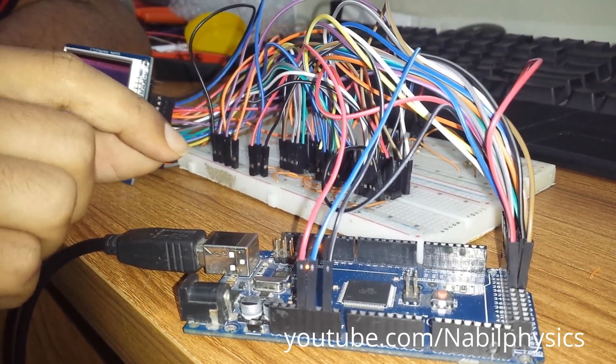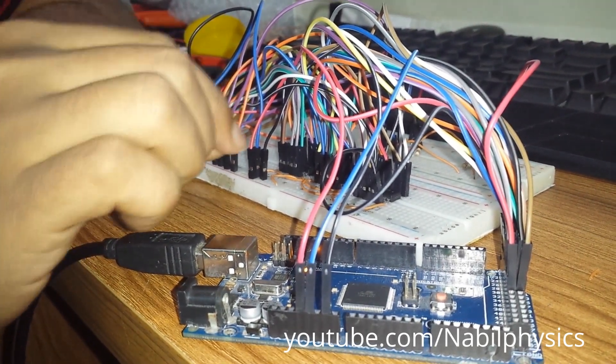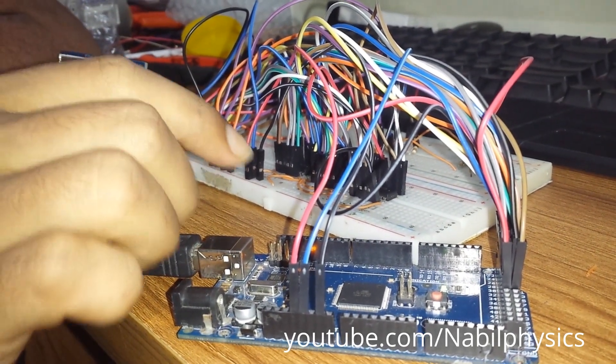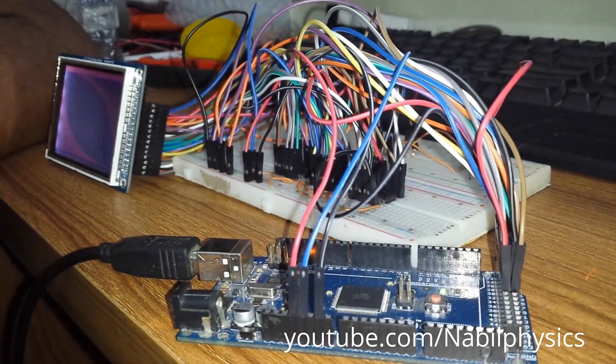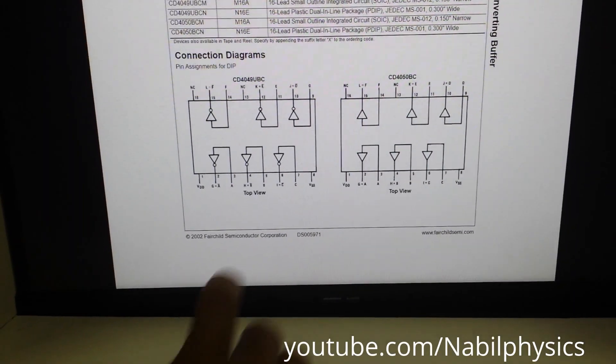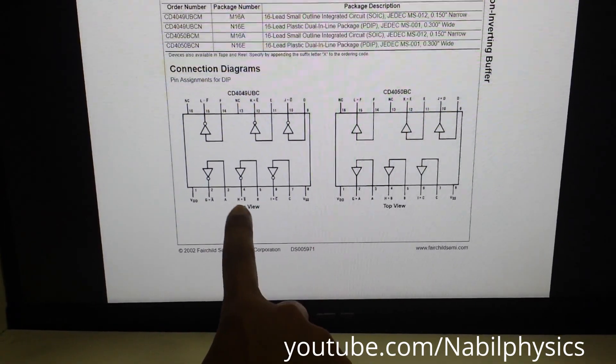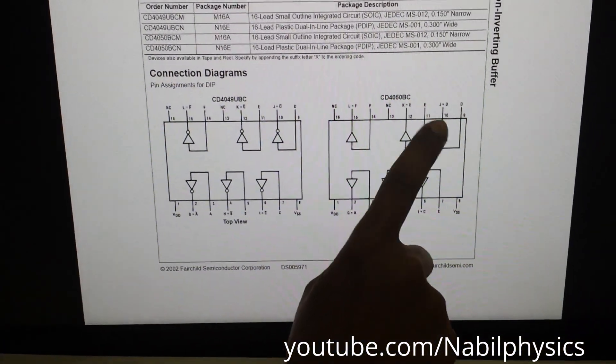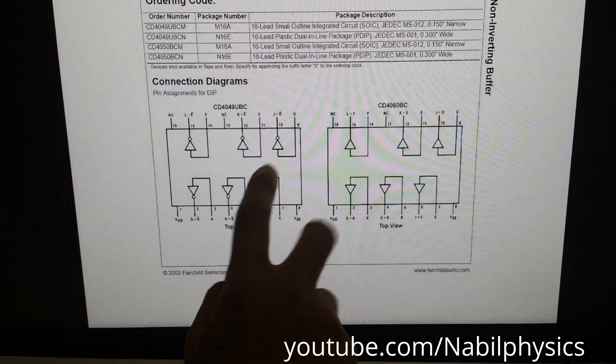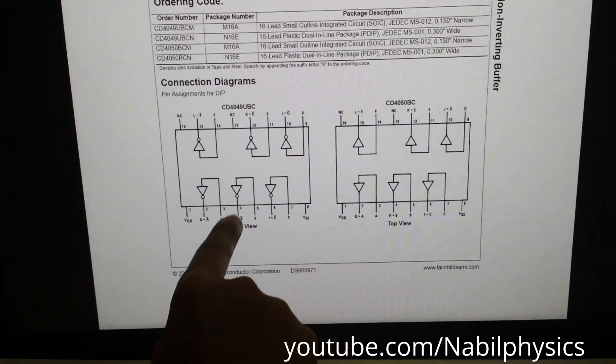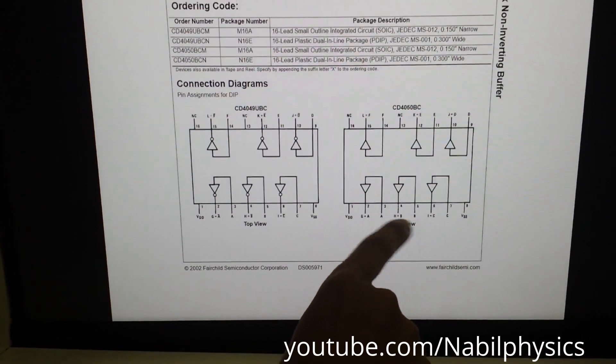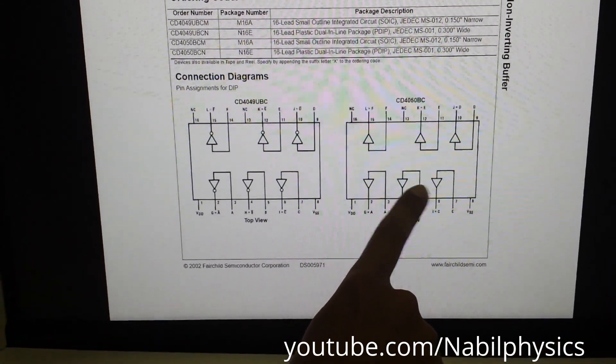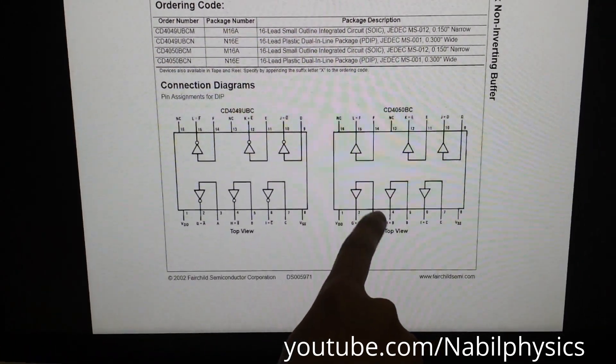In this project I have used CD4050 IC for voltage level shifting. Here is the circuit diagram for connecting Arduino with the TFT display. This is the inside diagram of this IC and we can see that there are two ICs CD4049 and CD4050. Both are of the same family but this is the voltage inverter IC and this is the voltage buffer IC. I have used the CD4050 because I have just directly shifted the 5 volt to 3.3 volt.